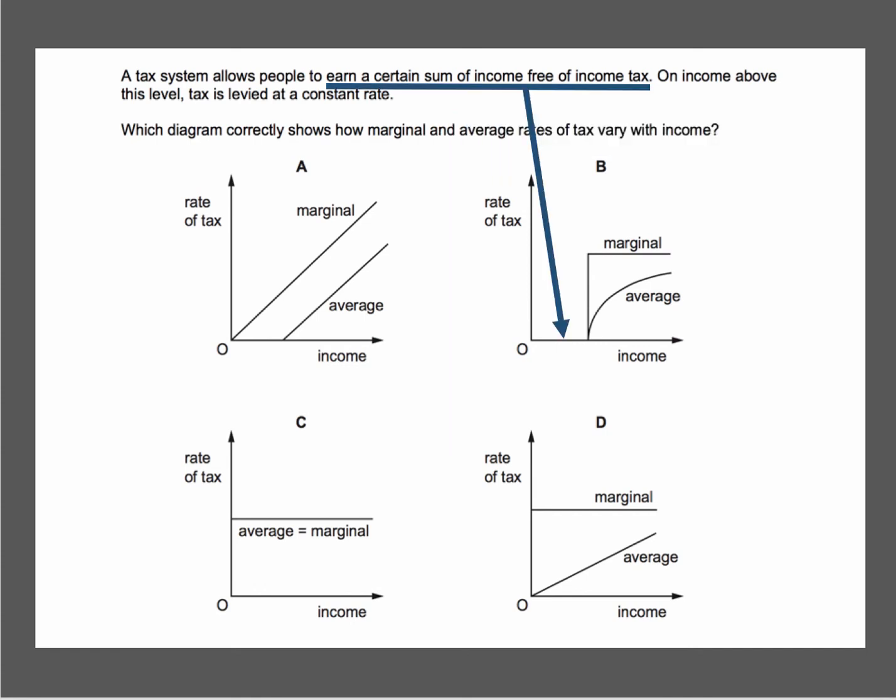So let's look at why that's the case. First, you can earn a certain sum of income free of income tax. On the x-axis, for that first portion of income from zero through to the intersection point, it is tax-free. On the y-axis we are measuring the rate of tax.